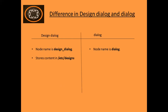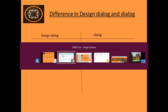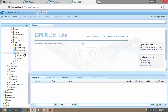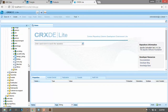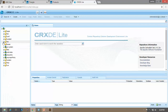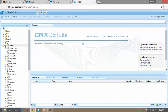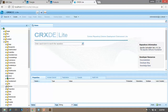That was the first difference. The second difference is that design dialogue stores the content in the etc/designs path — it is the design path of the template — whereas dialogue stores the content in the content website path, within your page.